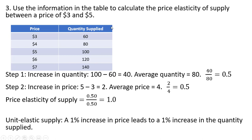Moving on to our last example: we're presented with a table showing price and quantity supplied, and we're asked to calculate the price elasticity of supply between $3 and $5. Starting with step 1, when we go from $3 to $5, the quantity increases by 40 — it goes from 60 to 100. We divide 40 by the average of the two quantities, which is 80, and get one half.